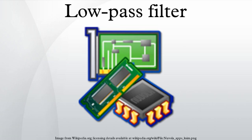A low-pass filter is a filter that passes low-frequency signals and attenuates signals with frequencies higher than the cut-off frequency. The actual amount of attenuation for each frequency varies depending on specific filter design. It is sometimes called a high-cut filter, or treble-cut filter in audio applications.